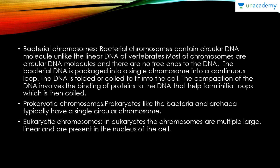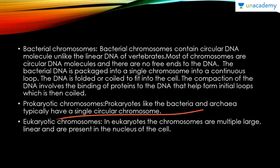Now let's look at chromosomes in three different cell types. Bacterial chromosomes contain circular DNA — unlike the linear DNA of vertebrates, most bacterial chromosomes are circular with no free ends. The bacterial DNA is packaged into a single continuous loop and is folded or coiled to fit into the cell through protein binding that forms initial loops which are then coiled. Prokaryotes like bacteria and archaea typically have a single circular chromosome.